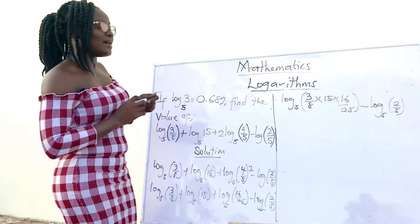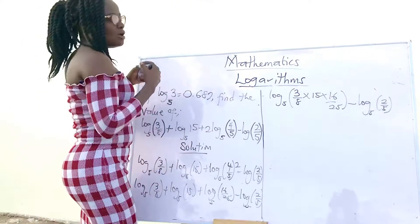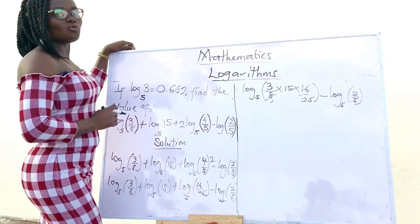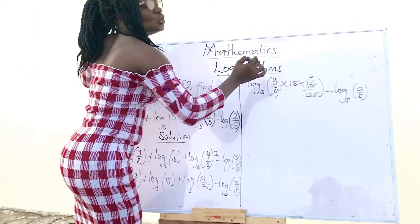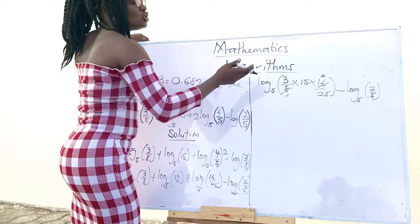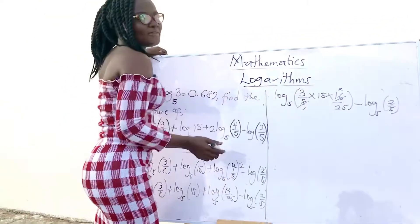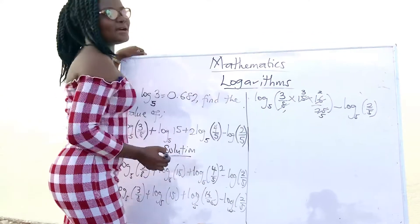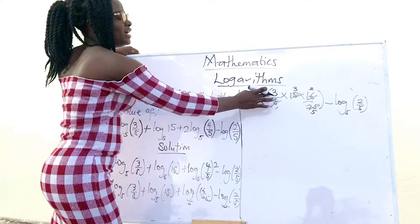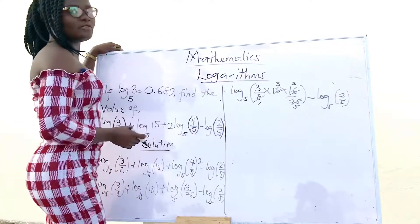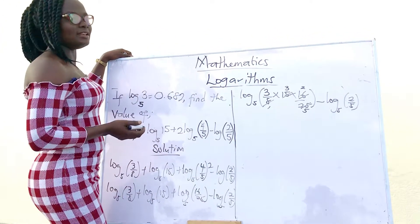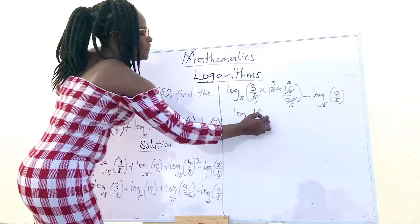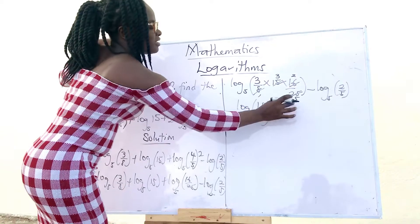So, applying the first law, we can simplify it. Looking at this, 8 can go into 16 two times. We can also use 5 to simplify 15 and 25. So, 5 goes into 15 three times and goes into 25 five times. Then, 3 times 3 times 2 gives us 18. So this becomes log 18 base 5 over 5.